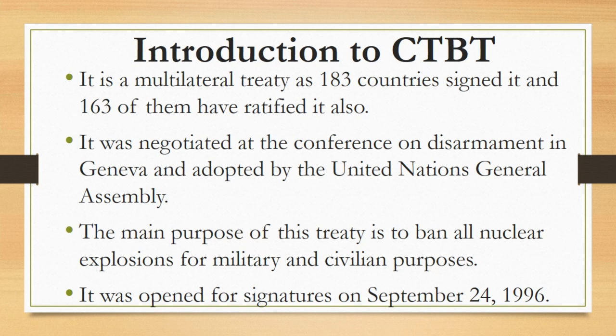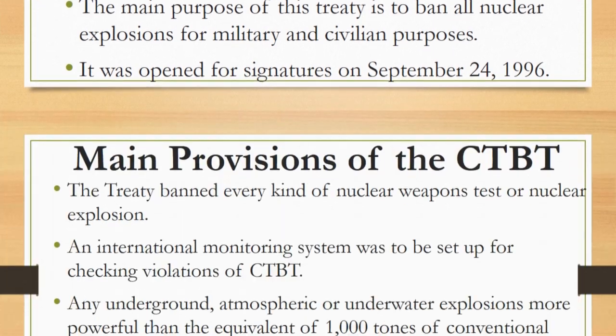The main purpose of this treaty is to ban all nuclear explosions for both military and civilian purposes. It does not allow nuclear explosions even for peaceful purposes. It was negotiated at the Conference on Disarmament in Geneva and adopted by the United Nations General Assembly. It was opened for signatures on September 24, 1996.